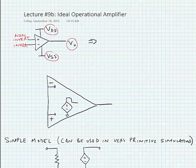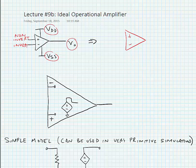A simplified schematic representation of this circuit can be used where we leave out the voltage supplies, knowing of course that the amplifier will still have a finite output range.